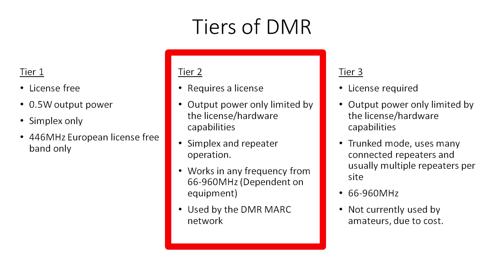Tier 2 DMR has no power limit and works in simplex mode as well as conventional repeater mode. DMR is very comparable to narrow FM — it uses the same bandwidth channels, can use the same repeater offsets, and is primarily used for conveying voice. This is not a coincidence: tier 2 DMR was designed so it could be used as a replacement for narrow FM repeaters.